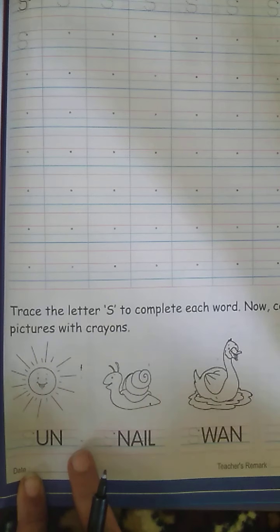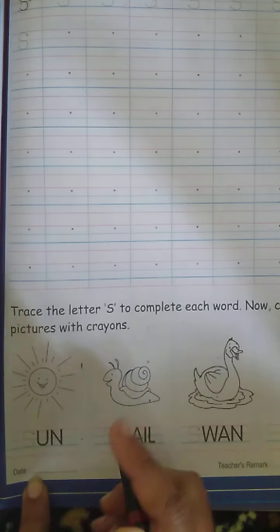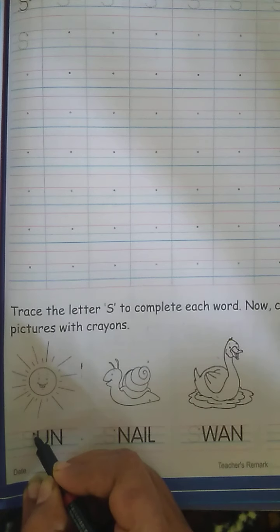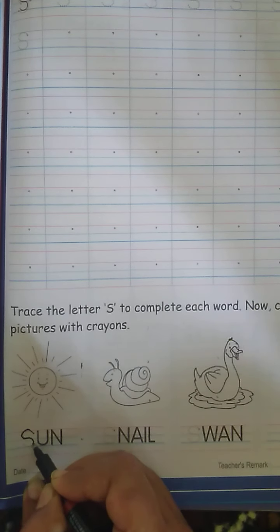Now, what do you see in this picture? Sun. What is the spelling for sun? S-U-N. So, we will write the missing letter S here. Like this.